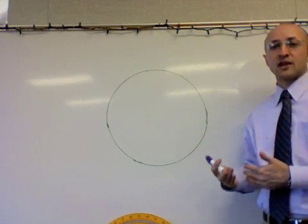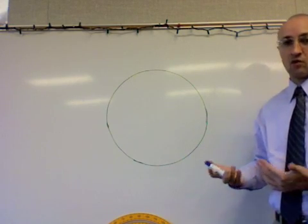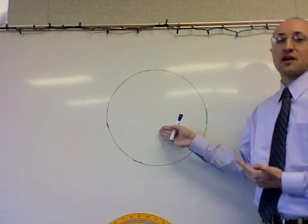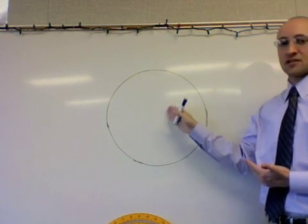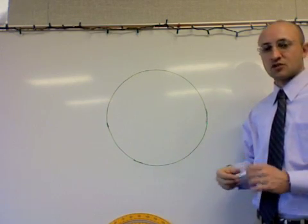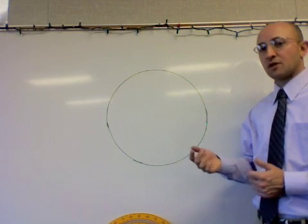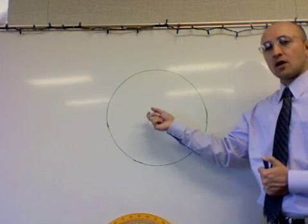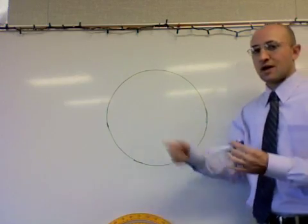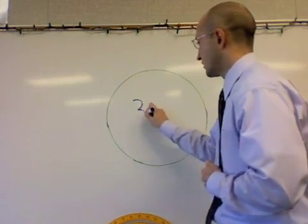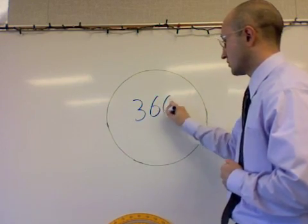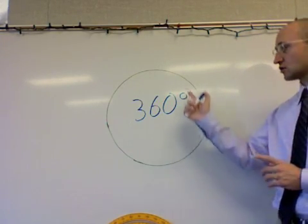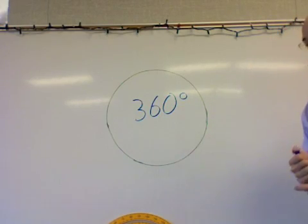Now we're going to get into a few steps that will give us more information about circle graphs. In order to have a circle graph, we have to have a circle. The data in a circle graph is going to be displayed in something that looks like pizza or pie slices. Now, the circle also has a measurement, and we know that all circles are equal to having the measurement of 360 degrees — something we definitely want to put in our notes.